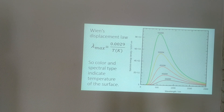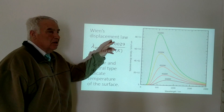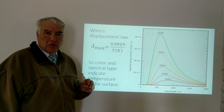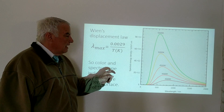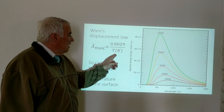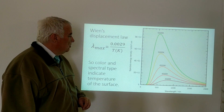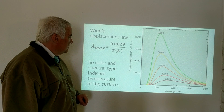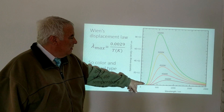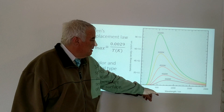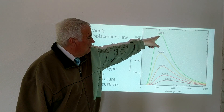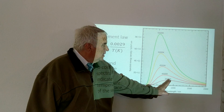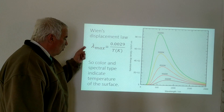How does this relate to temperature? There's something called Wien's Displacement Law, which is a simple equation. The wavelength at which the spectrum peaks equals 0.0029 divided by the temperature in Kelvin. We have a plot showing wavelength in nanometers, and the peak of the spectrum shifts in wavelength according to this equation depending on the temperature.